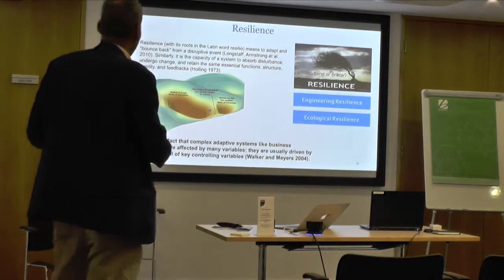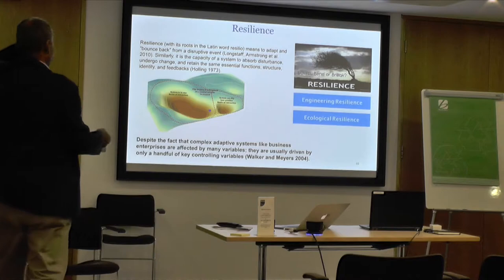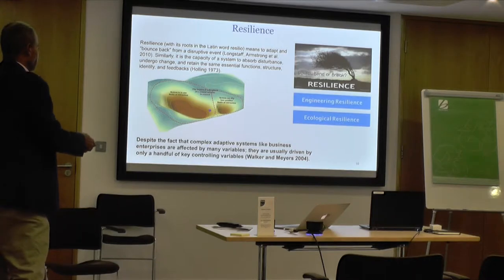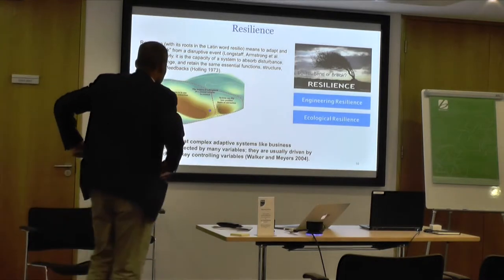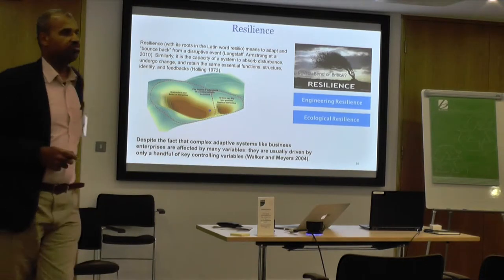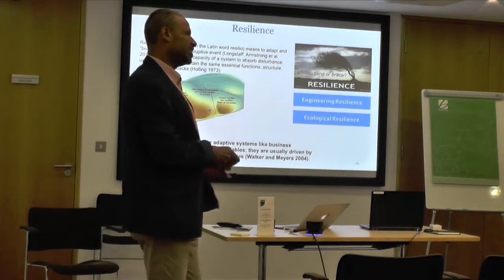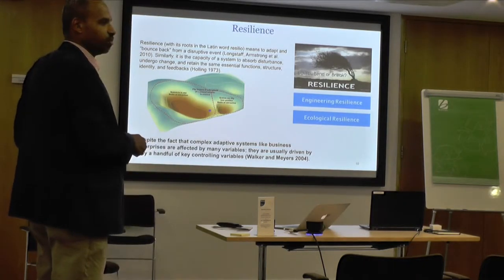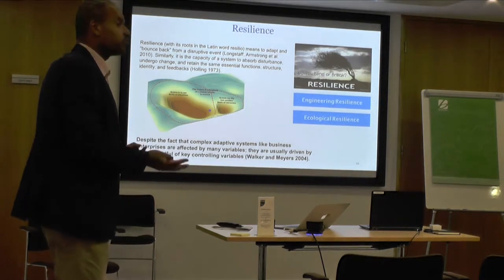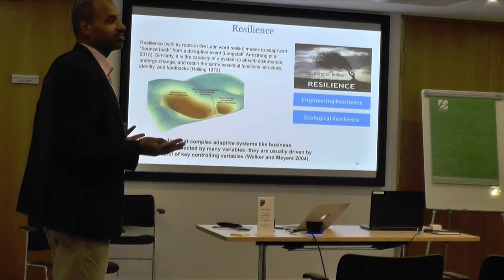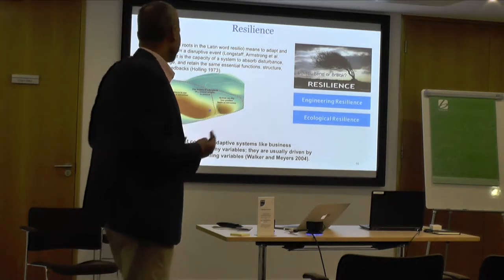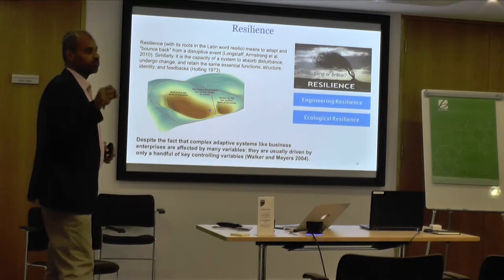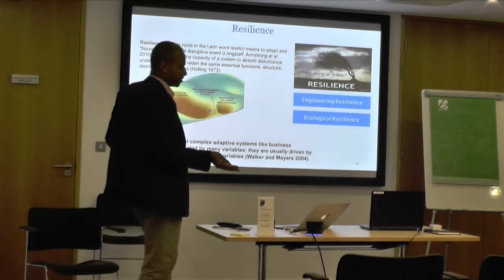Walker and Mayer say that complex adaptive systems like businesses, although they are affected by many variables, are usually driven by only a handful of key controlling variables - and these are really what we're looking for. Can we determine what are the key controlling variables that we can get ready for, and therefore control, or at least predict this jump, and be able to deal with it when it counts? We can never fully, reliably predict them, but we can sense when they approach. Only a handful of key controlling variables - not all controlling variables are equally important.